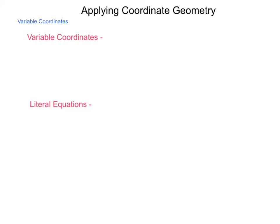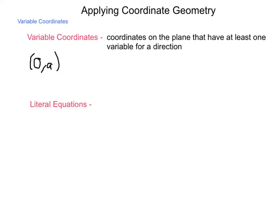For starters, let's just define what these are. Variable coordinates are coordinates on the plane that have at least one variable for a direction. So we're used to seeing things in terms of x and y, and typically x and y are numbers, but as we work with variable coordinates we could say something like the coordinate (0,a) or (b,0) or even the coordinate (c,d) in order to establish a location. The nice thing about using variable coordinates is that they do stand for any location on the graph that meets the qualification. It could be positive, negative, on an axis is where we have the zeros.